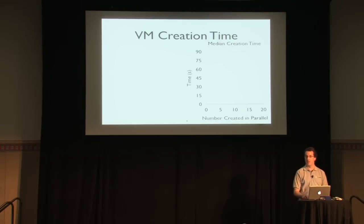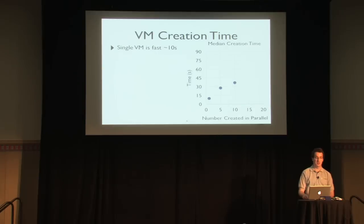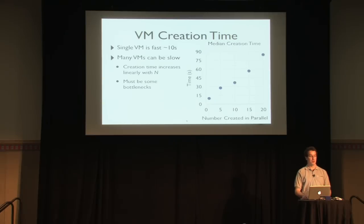When we create one virtual machine on this setup it's pretty quick — less than 10 seconds. But the problem is that as we create more virtual machines in parallel the time scales poorly: 5 in parallel takes 30 seconds, 10 in parallel takes about 35-40 seconds, and so forth. Creating many virtual machines in parallel can be slow.